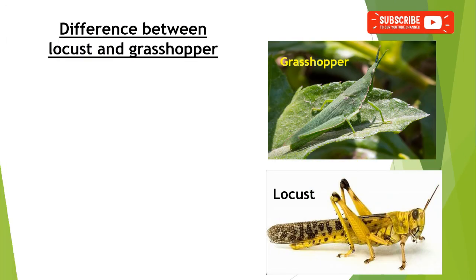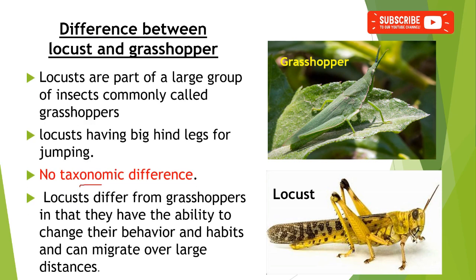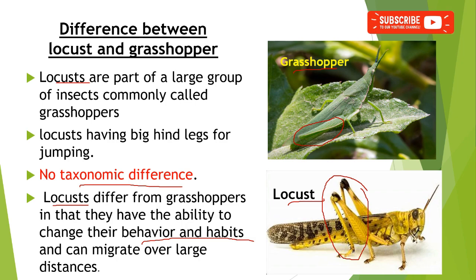What is the difference between the locust and grasshopper? There is no taxonomic difference between locusts and grasshoppers. Locusts are a large group of insects commonly of grasshoppers. In case of locusts, the hind legs are big as compared to grasshoppers for jumping purpose. But in the case of locusts, they have an ability to change their behavior and habits and can migrate over larger distances.